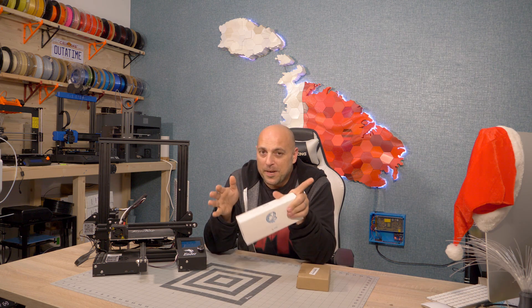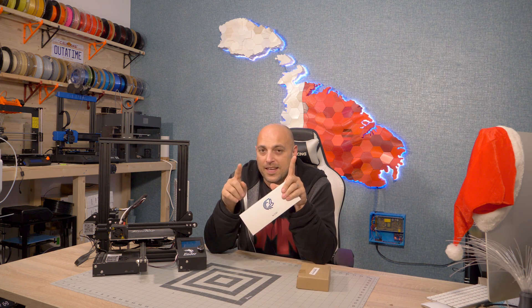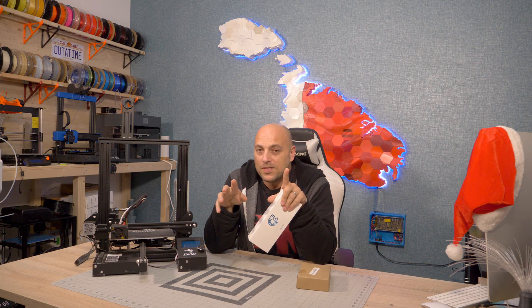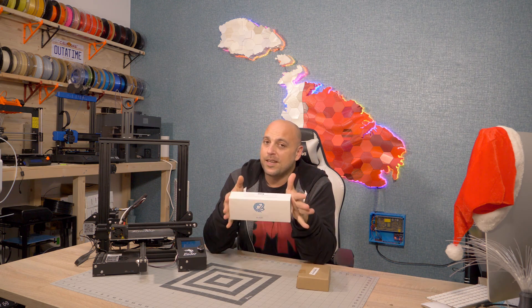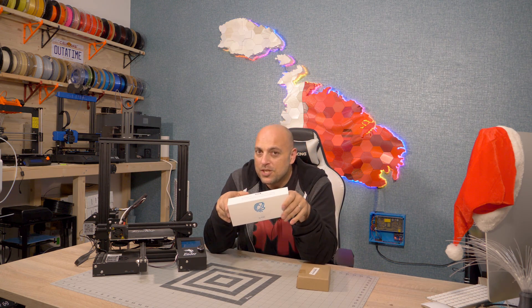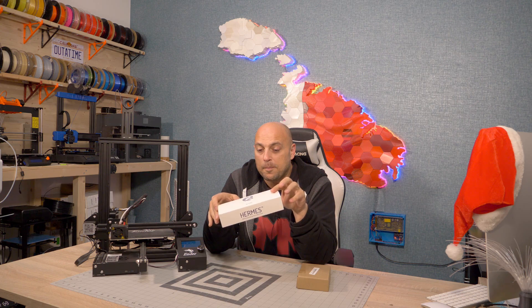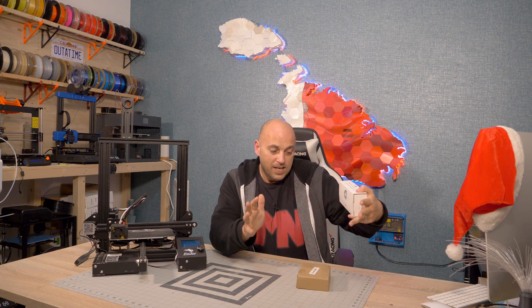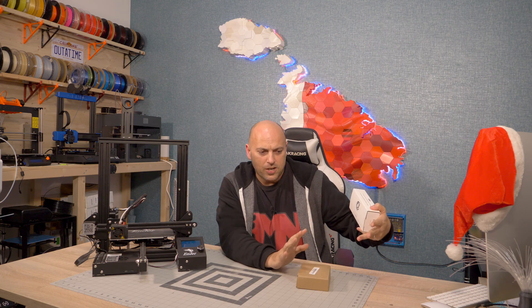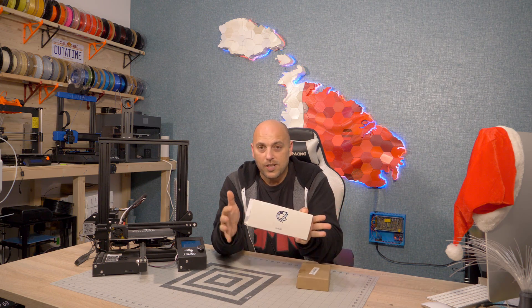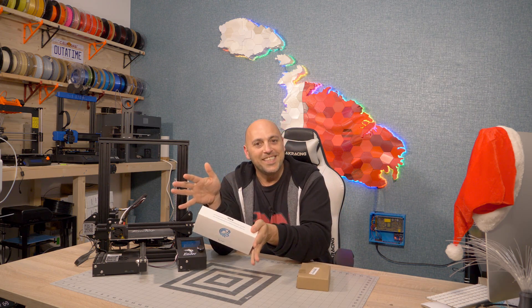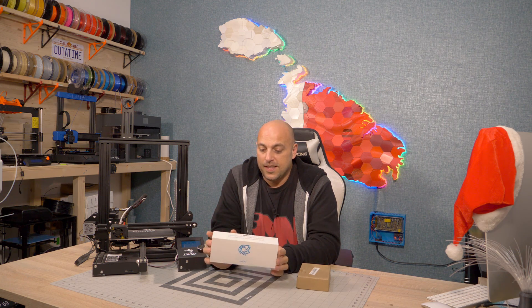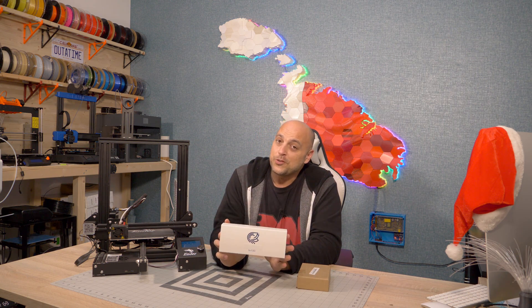In comes the E3D Hemera. Now you might think that I just mispronounced Hermes. No, the name is now called Hemera. Name has been changed last minute, but don't fret it's still the same awesome extruder. Rather than being called Hermes for Greek god of thievery, it's now called Hemera for the goddess of light. Personally I would have gone with Zeus, because Zeus is the king of the gods and this is definitely the king of the extruders.